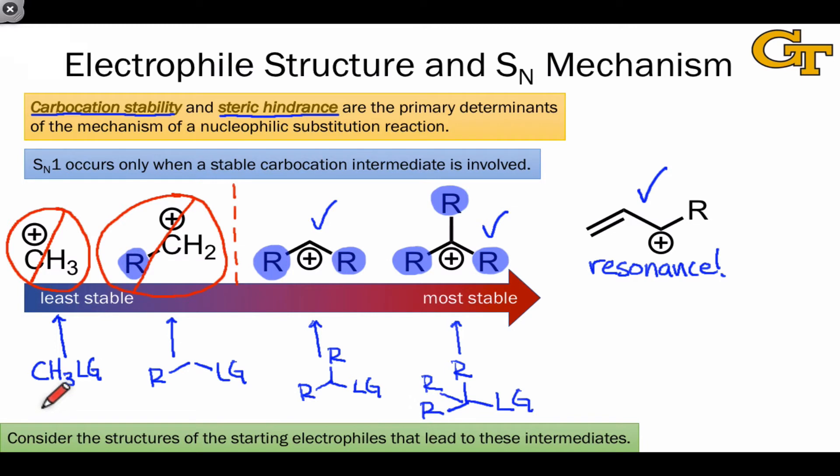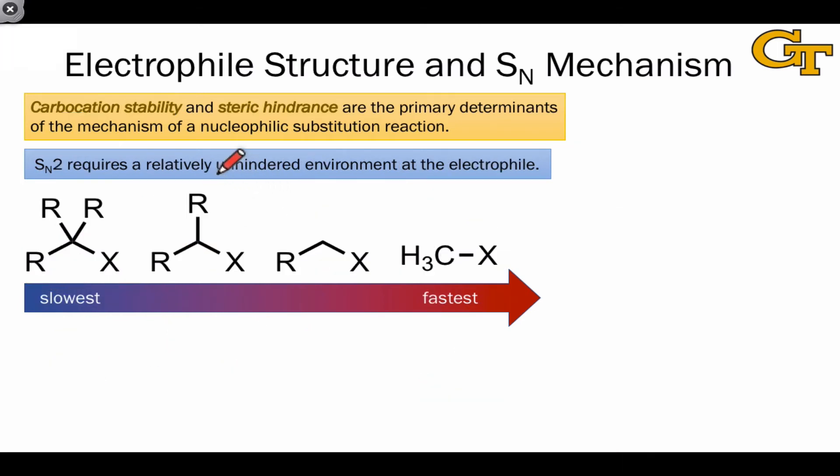The methyl and primary substrates, which would give rise to these unstable intermediates, can engage only in the SN2 reaction. This means that in reactions with relatively weak nucleophiles, these substrates tend to not react or react only very slowly. The key to the SN2 reaction is an unhindered environment at the electrophilic atom, typically carbon.